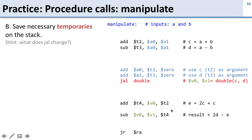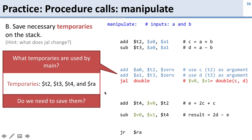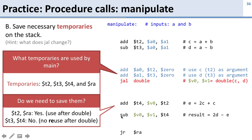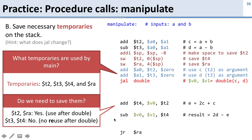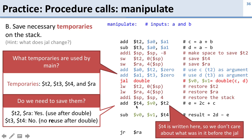What temporaries do we need to save in manipulate? It uses t2, t3, t4, and ra. We need to save t2 and ra because after the jump to double, we use t2 again and then use ra again — so if double changes them, we'd lose them. We don't need to save t3 or t4: we never use t3 again after double, and t4 is immediately written over after double without being read first. So we push the stack down by 8 bytes to save both t2 and ra, then restore them and move the stack back up by 8 at the end.